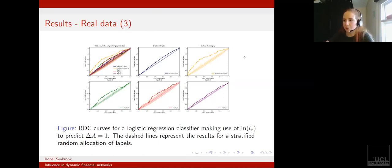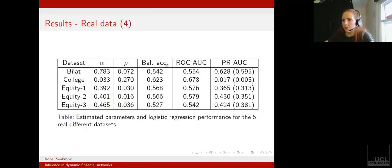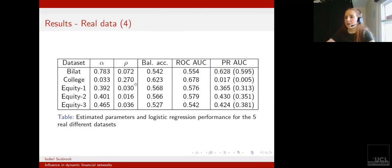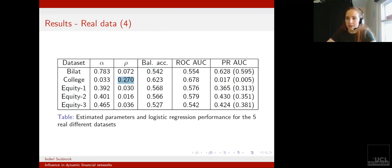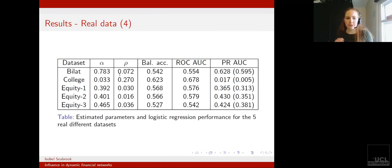The next thing is to compare the performance of these classifiers to the parameters of our model, as presented in this table. The college messaging data set is showing a value for the parameter rho which is an order of magnitude higher than the parameter values for the other data sets. The fact that this is also showing the best classification performance could perhaps suggest a relationship between the parameter values and classification performance.